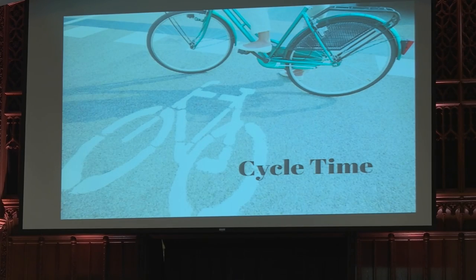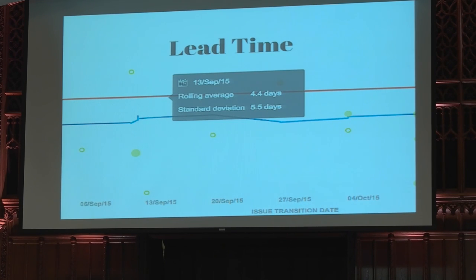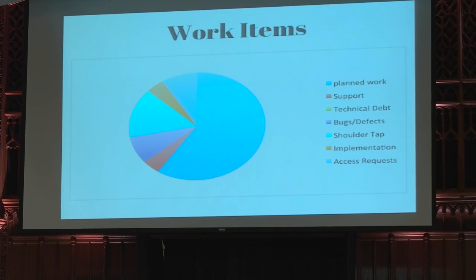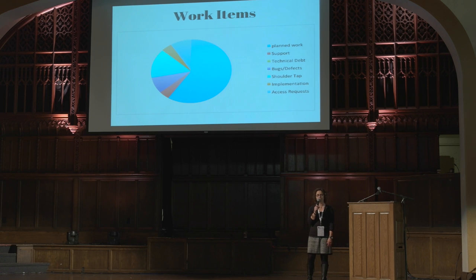Next up is cycle time — that's how long work takes to get completed once you've started. Are you getting interrupted? Are you getting blocked? Is the work small enough to move through? The counterpart to cycle time is lead time: how long it takes a new request to be ready to be picked up and worked on. Is it fairly consistent, or do you have outliers languishing in the backlog while others zoom right through? The last thing we look at is the type of work we do — especially unplanned support work. You might want to hold back some capacity for that, and it can also tell you where you have technical debt or quality problems.